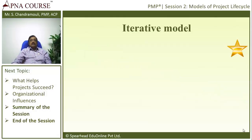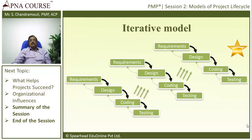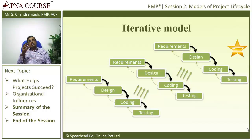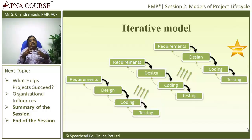The next model is the Iterative Model — doing the same thing again and again. In this model, the requirement phase is executed multiple times. For example, module one goes through requirement, then design, then coding; then module two goes through requirement, design, coding, and testing. The requirement phase, design phase, and coding phase are all executed multiple times because we go module by module.